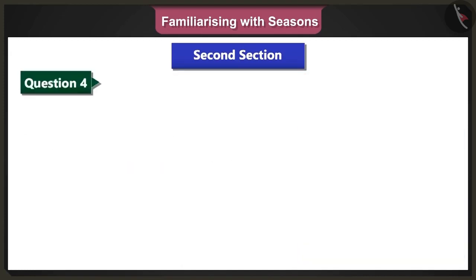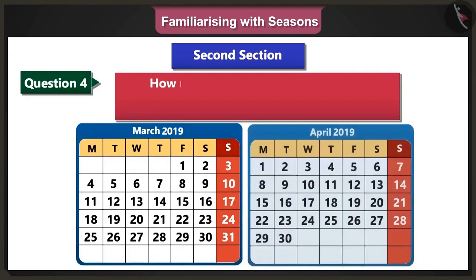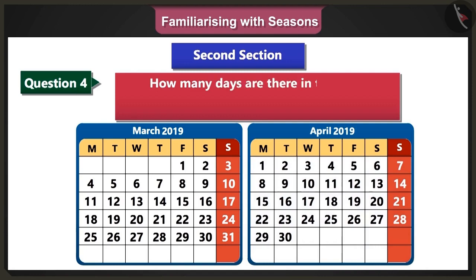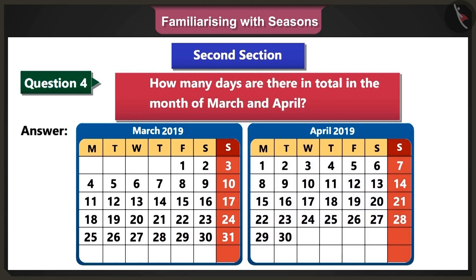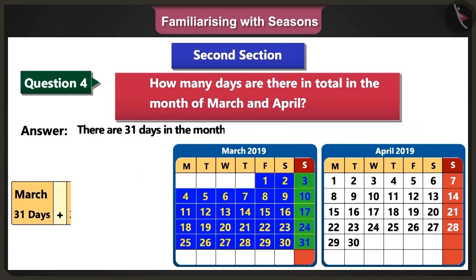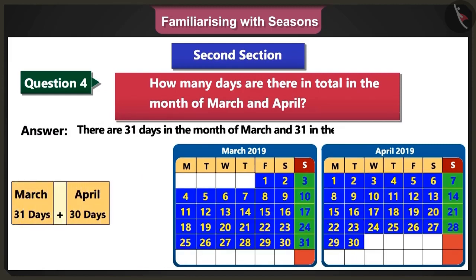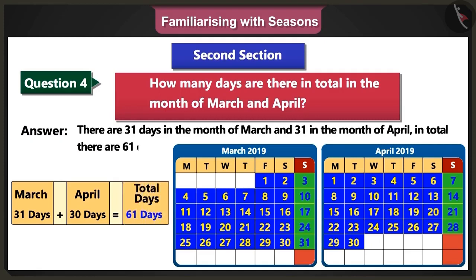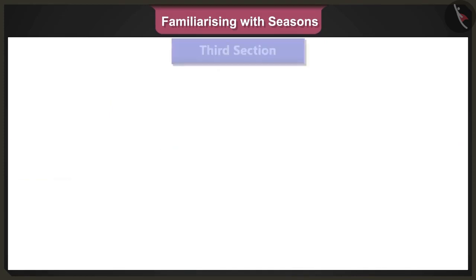Fourth question: How many days are there in total in the months of March and April? Answer: There are 31 days in the month of March and 30 days in the month of April. When we add both, we get a total of 61 days.